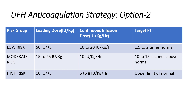For the moderate-risk group, the target PTT is 10 to 15 seconds above the normal value. For the high-risk patient group, the loading dose will be 10 IU/kg body weight followed by a continuous infusion of 5 to 8 IU/kg/hour, with a target PTT at slightly above the upper limit of the normal value.